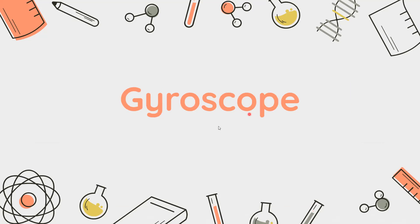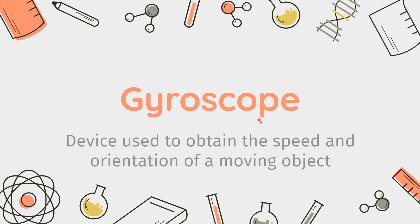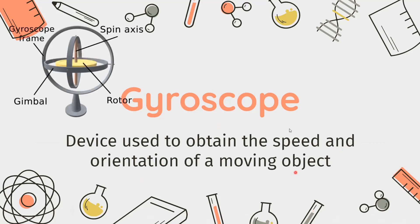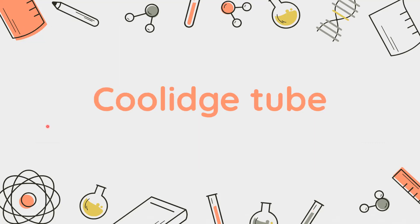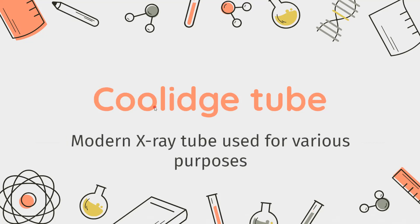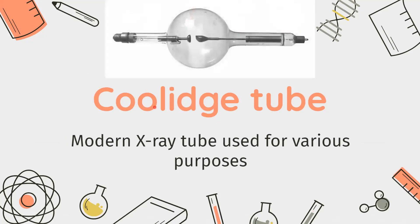Next we have the Gyroscope. A Gyroscope is used to obtain the speed and the orientation of a moving object, and this is how a Gyroscope looks like — these are the different parts. Next we have the Coolidge Tube, which is used as a modern X-ray tube for the production of X-rays.